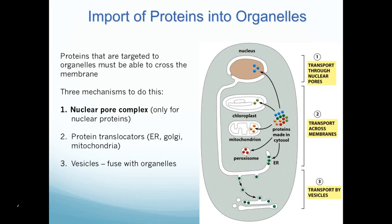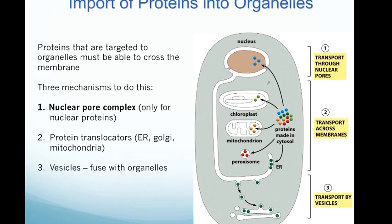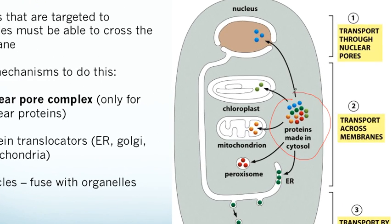All proteins, or the majority of proteins, are made in the cytoplasm. The messenger RNA is made from the nucleus, it's exported, and that's where protein synthesis is contained. However, most proteins have their functions in different organelles — for example, in the nucleus, the chloroplast if this is a plant cell, the mitochondria, the endoplasmic reticulum, and so on. So there needs to be a way to get protein into these organelles that are originally synthesized in the cytoplasm, and that's what we're going to talk about today.